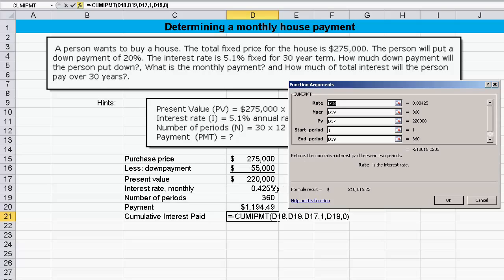The rate is given in cell D18 is 0.00425 or 0.425%. Number of periods given in cell D19, that's 360. The present value is D17, which is right there, 220,000. I don't want to put it in twice.